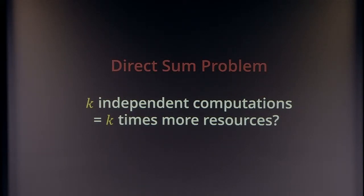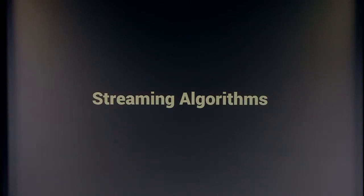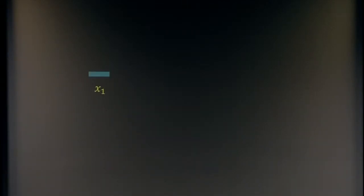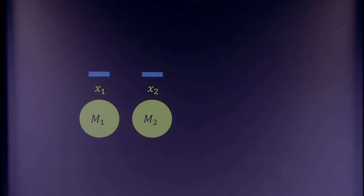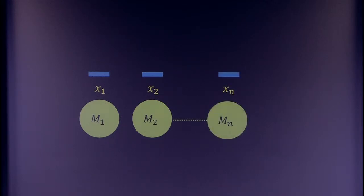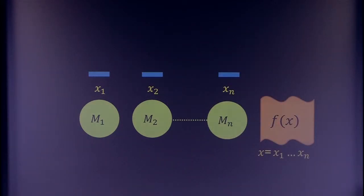The direct sum problem asks whether, if you perform k independent computations in parallel, they require k times more resources, or whether there is a clever way to somehow combine the computations so that you can save on the resources. We want to study this problem in the streaming setting, so let me remind you about the model.